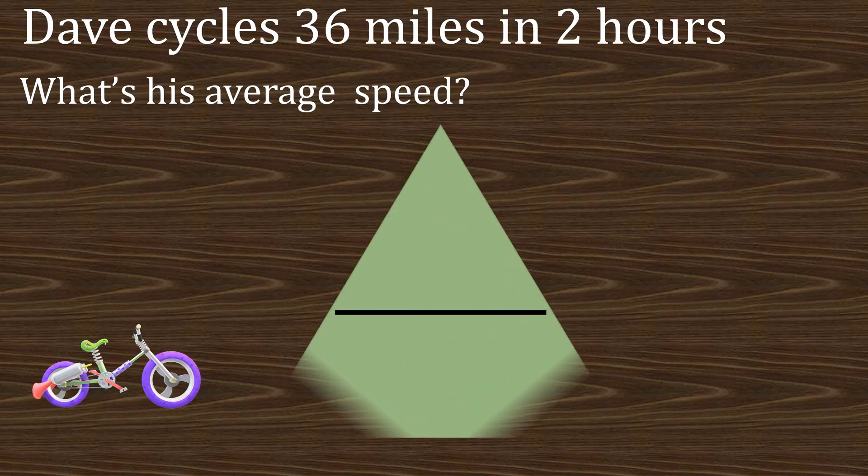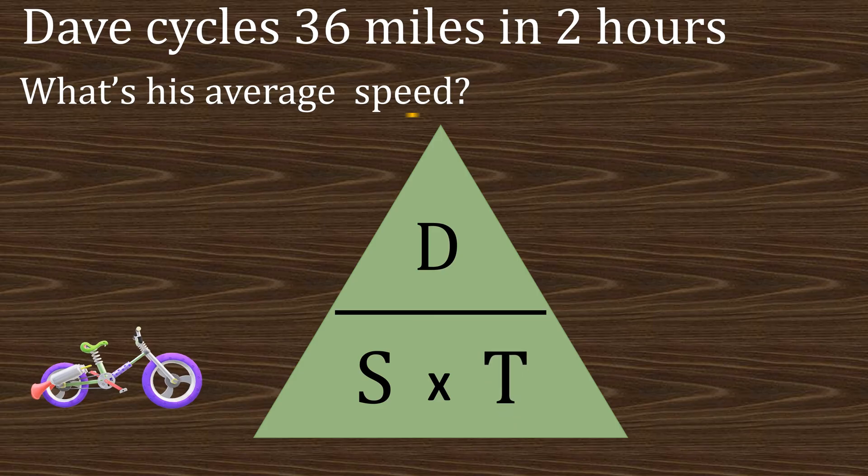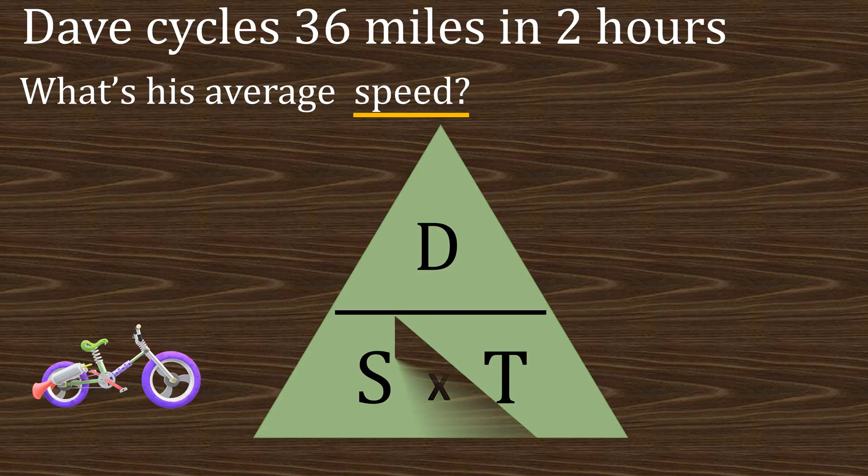What's his average speed? So here's a formula triangle: distance, speed and time. Now what is it asking us for? It's asking us for the speed. So what we do is we cover up the speed and we're left with